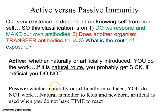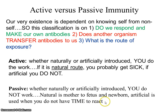Passive - you're transferred antibodies, whether naturally or artificially, and you do not do the work. Natural passive immunity is mother to fetus, and a newborn through mom's breast milk. Artificial passive immunity is used when you do not have time to actually react and will probably die - things like Rhogam, antivenom, or an antiserum if you've been exposed to something terribly toxic or lethal.